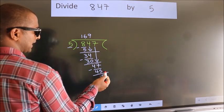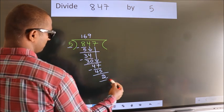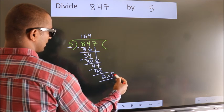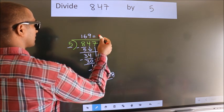No more numbers to bring down. So we stop here. This is our remainder. This is our quotient.